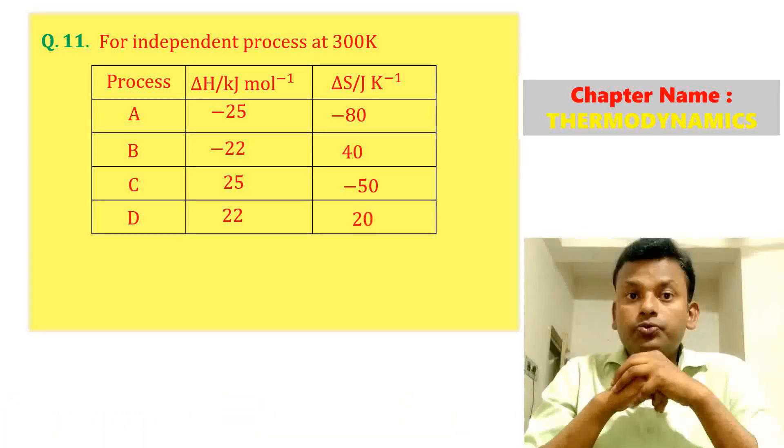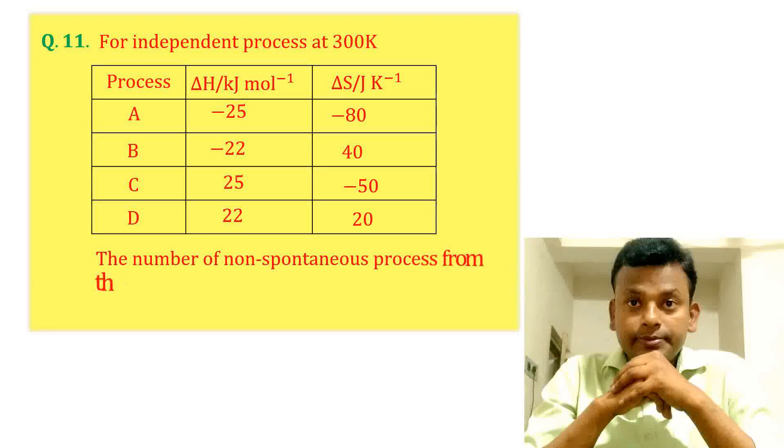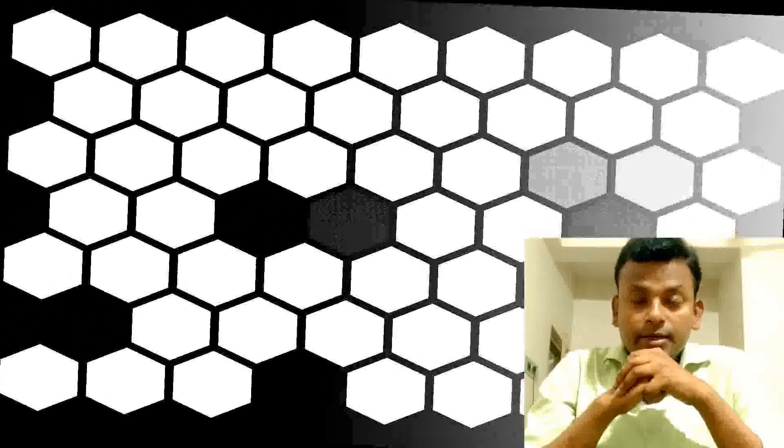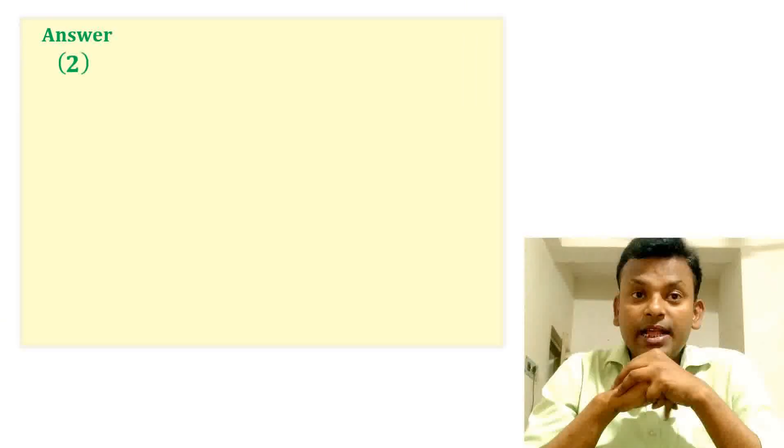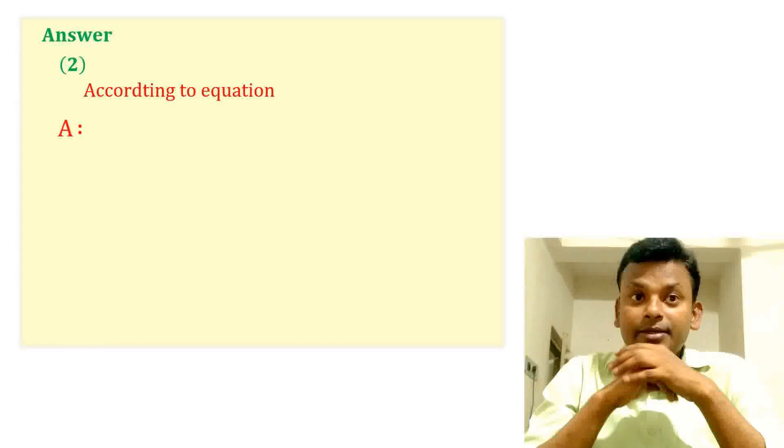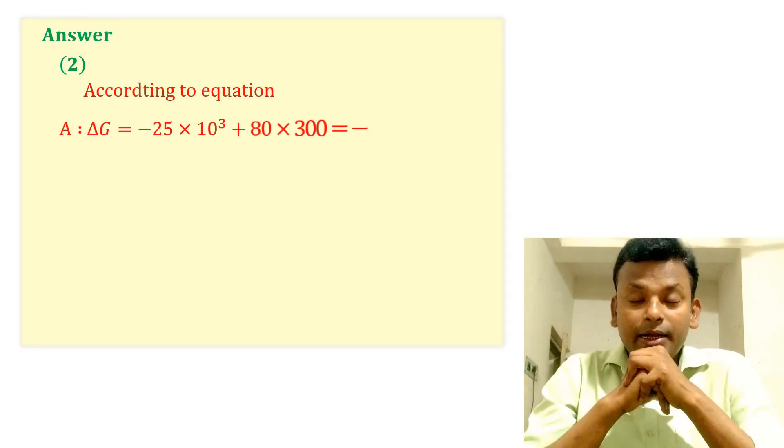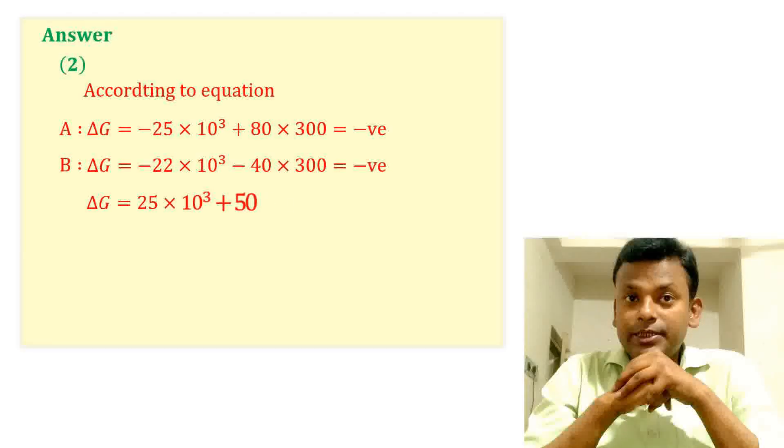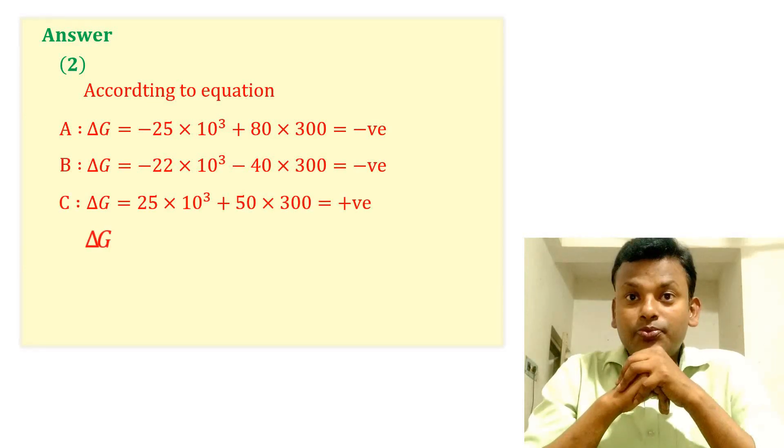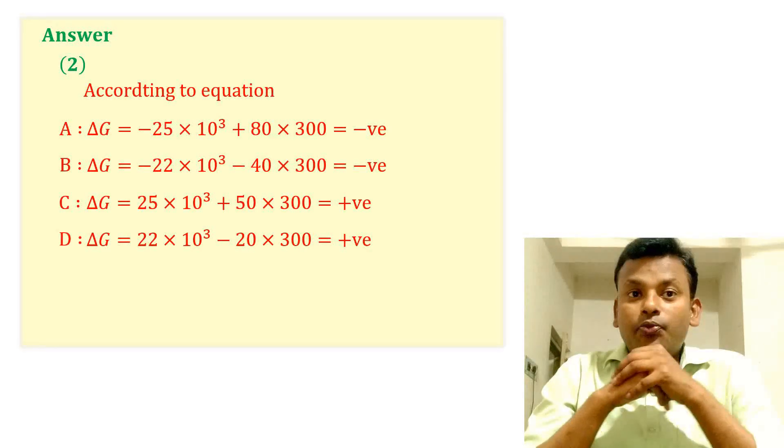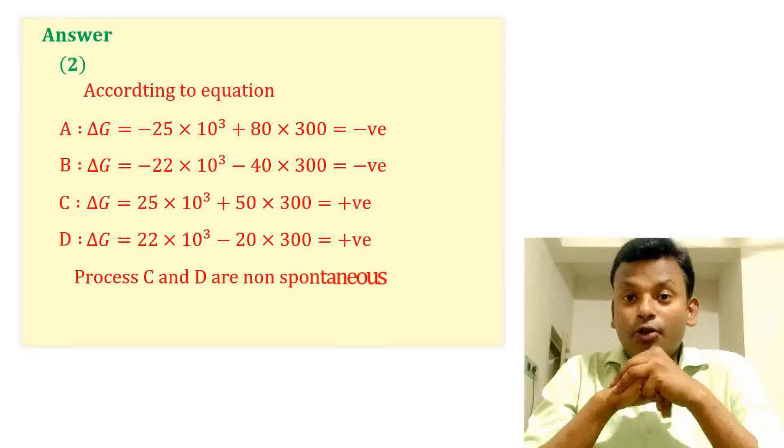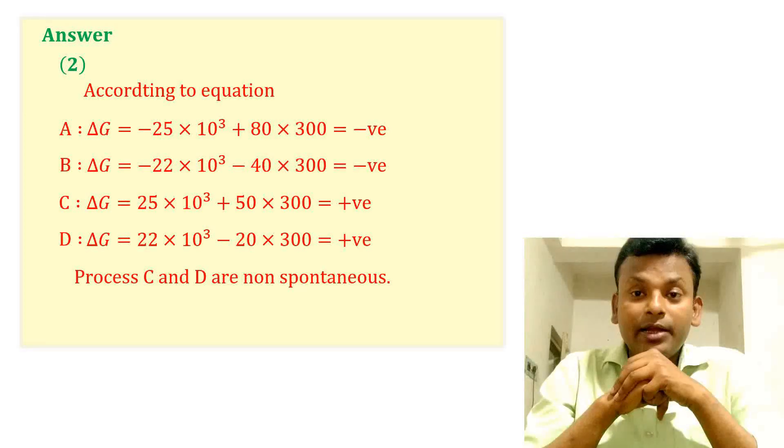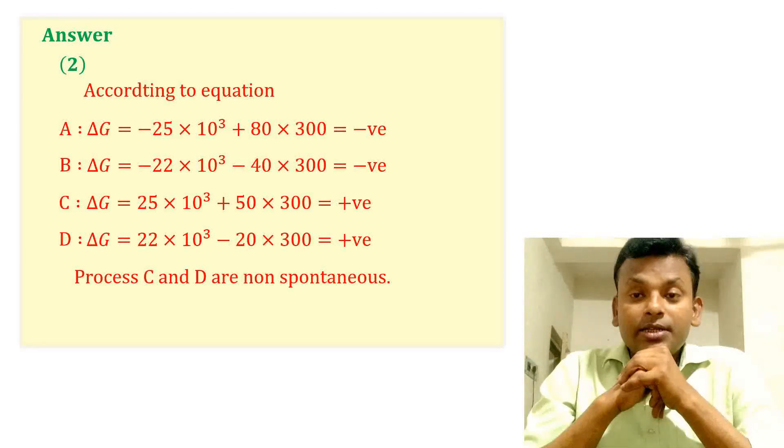Question 11: For independent processes at 300 Kelvin, the number of non-spontaneous processes from the following is? Answer is 2. According to equation del G equals to del H minus T del S. For A and B, del G is negative. For C and D, del G is positive. C and D are non-spontaneous because del G equals to positive, and del G equals to negative for spontaneous processes. So answer is 2.